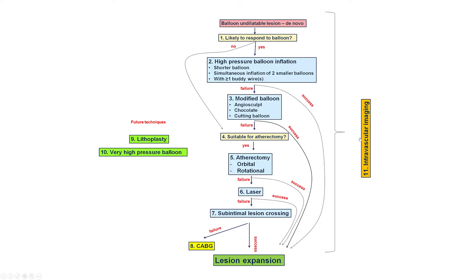So what to do next? This brings us to the algorithm for balloon-undilatable lesions. The key differentiating factor is whether it's a de novo or an in-stent lesion — in this case, it was de novo. The question is whether it's likely to respond to a balloon. With very heavy calcification or when intravascular imaging shows circumferential, especially thick, calcium, going upfront to atherectomy is the better approach.